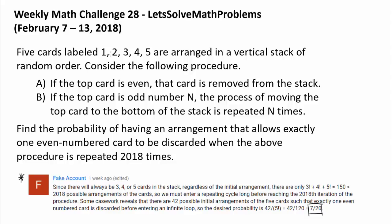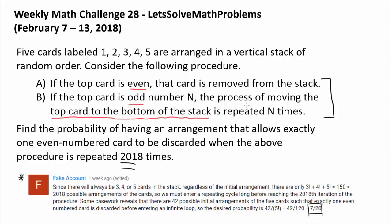We have 5 cards labeled 1, 2, 3, 4, and 5, arranged in a vertical stack of random order. We are going to repeat the following procedure 2018 times. The procedure is: if the top card is even — if the top card is 2 or 4 — then that card is removed from the stack. And if the top card is odd, we move the top card to the bottom of the stack and repeat this n times, where n is that odd number.